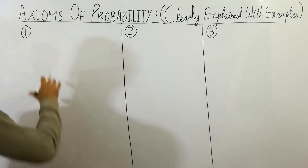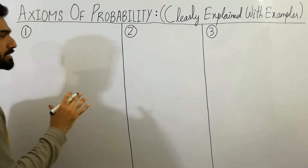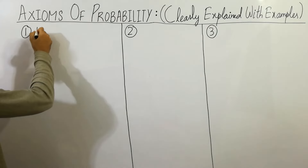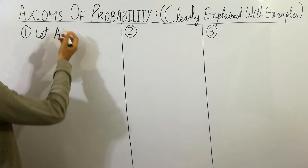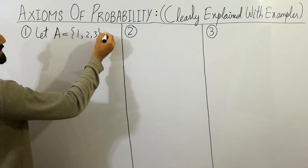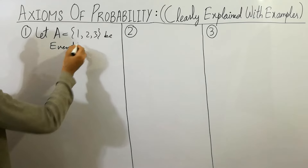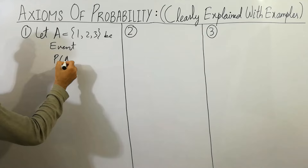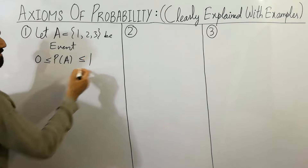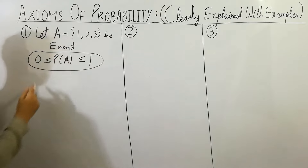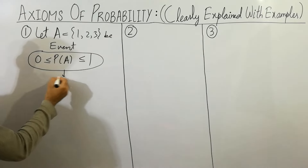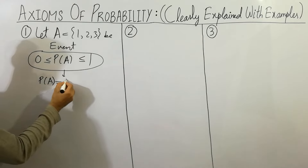Here, first of all, I am going to discuss the first axiom of probability. Let's suppose that we have A — you can see that A is an event: 1, 2, 3. And must remember that probability of A is always between 0 and 1. What does that mean? I will discuss examples also.